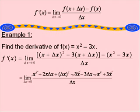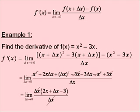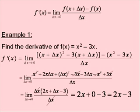From here, we have a number of terms in the numerator which cancel out. Factoring out delta x leaves us with the limit as delta x approaches 0 of delta x times the quantity 2x plus delta x minus 3. The delta x in the numerator and denominator cancel out, and replacing delta x with 0, we find that our derivative is 2x minus 3. So the derivative itself is a function.